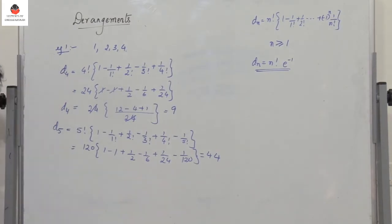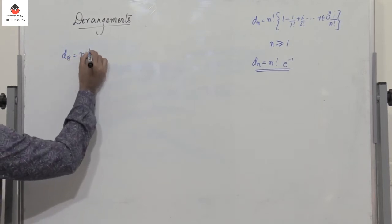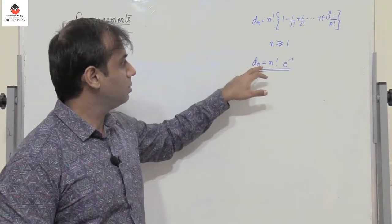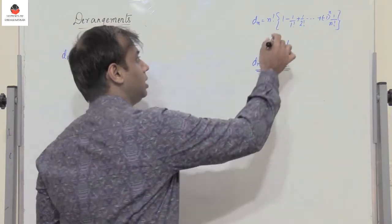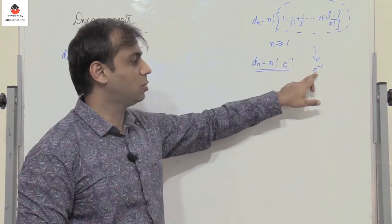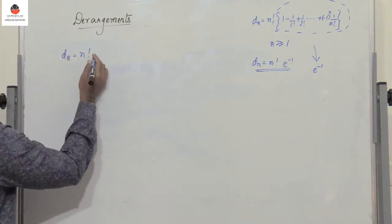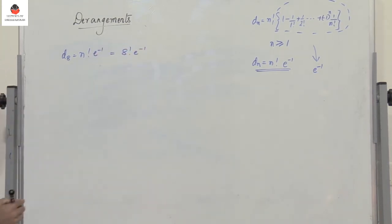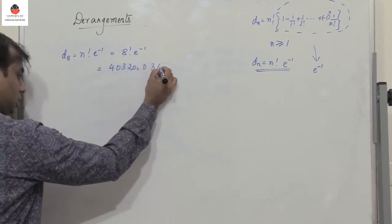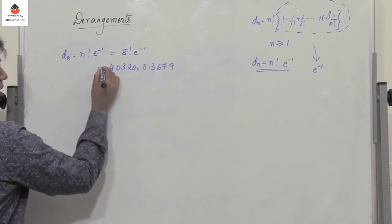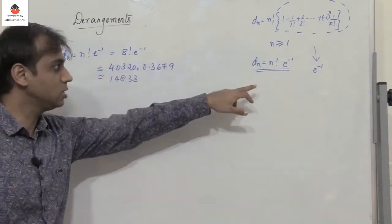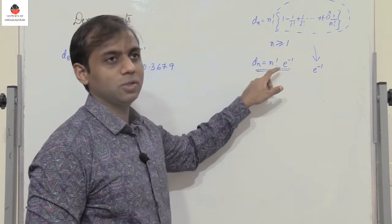Now let us find D8. As the value of n becomes larger and larger, this entire bracketed term can be approximately written as e power minus 1, which is a constant. So D8 equals 8 factorial into e power minus 1, which is 40320 times 0.3679, approximately equal to 14833. Beyond n = 7, you can use Dn equals n factorial into e power minus 1.